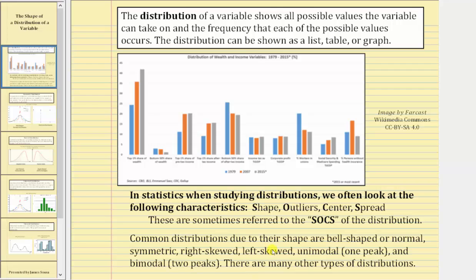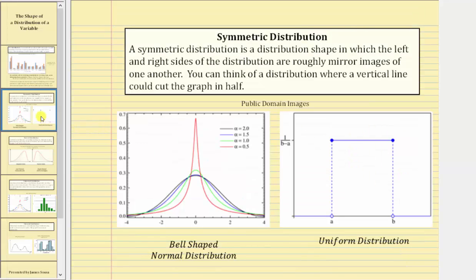Let's take a look at some of the more basic distributions based upon their shape. A symmetric distribution is a distribution shape in which the left and right sides of the distribution are roughly mirror images of one another. You can think of a distribution where a vertical line could cut the graph in half.